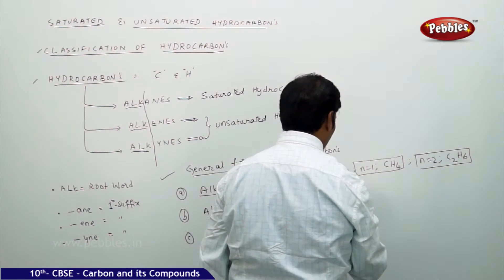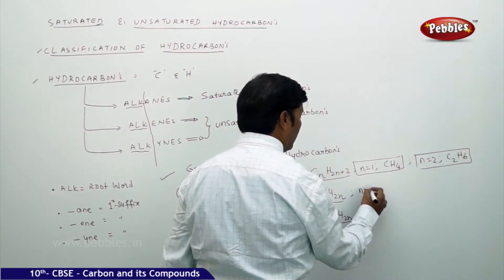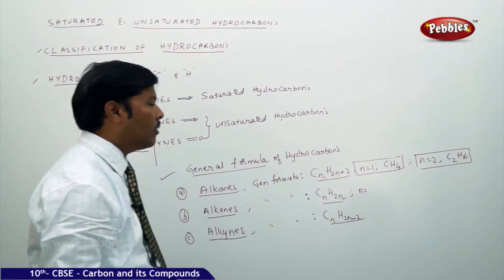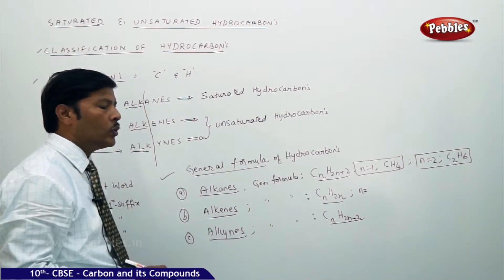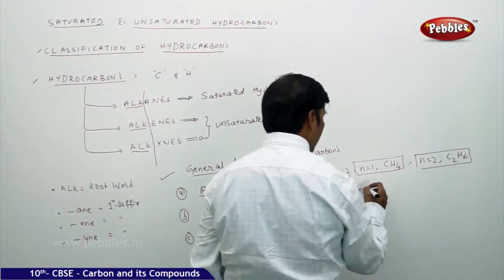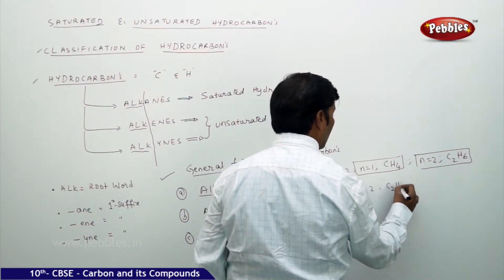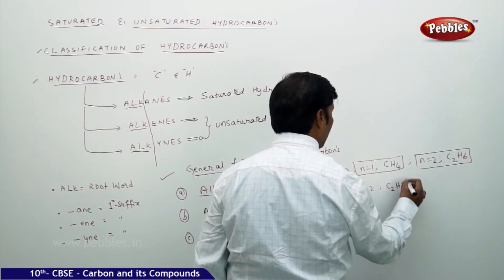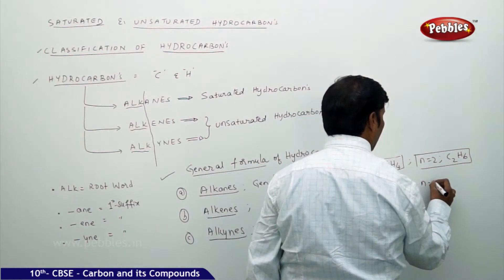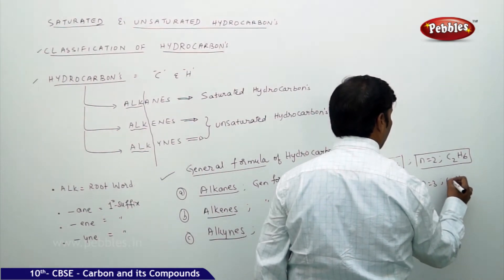For alkenes, the minimum number of carbon atoms should be 2. So substituting n = 2, we get C₂H₄, and for n = 3, we get C₃H₆.